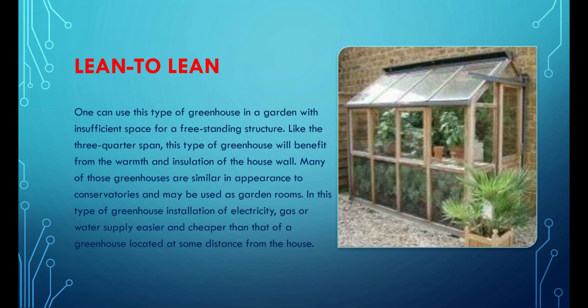The lean-to greenhouse can be used in a garden with insufficient space for a freestanding structure. Like the three-quarter span, this type will benefit from the warmth and insulation of the house wall. Many of these greenhouses are similar in appearance to conservatories and may be used as garden rooms. Installation of electricity, gas, or water supply is easier and cheaper than for a greenhouse located at some distance from the house.